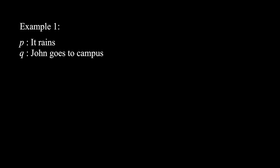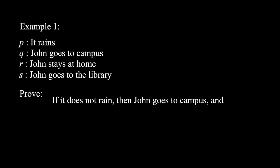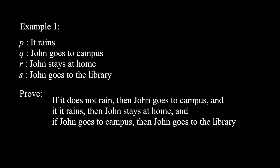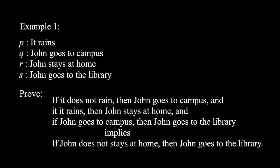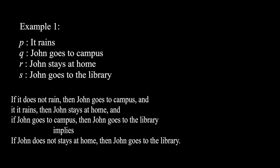Example 1. Let the following propositions be defined as follows: P is 'it rains,' Q is 'John goes to campus,' R is 'John stays at home,' S is 'John goes to the library.' Prove: if it does not rain then John goes to campus, and if it rains then John stays at home, and if John goes to campus then John goes to the library — implies: if John does not stay at home, then John goes to the library. In symbols, we must prove: (not p implies q) and (p implies r) and (q implies s), implies (not r implies s).